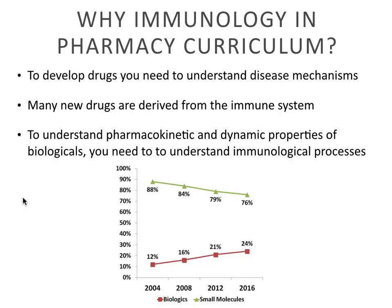So why do we have immunology in the pharmacy curriculum? To understand and to develop drugs you need to understand disease mechanisms. And many of the new drugs these days are derived from the immune system. To understand the pharmacokinetic and pharmacodynamic properties of these new drugs called biologicals, you need to understand immunological processes. There's this graph showing that the number of biological drugs between 2004 and 2016 has doubled, up to a quarter of all drugs sold.